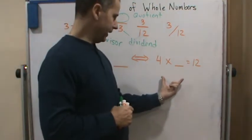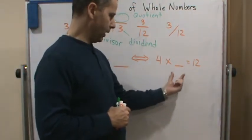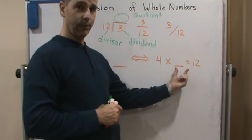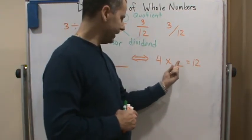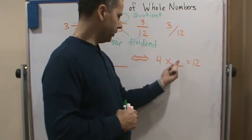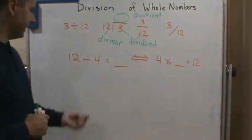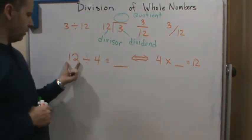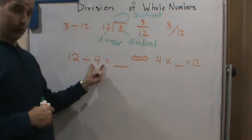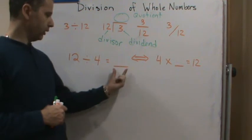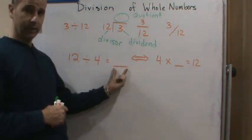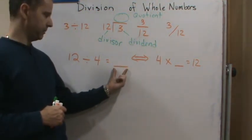When I look at it as a multiplication problem with this missing factor here, I say, okay, well what do I need to stick in here to make this true? The answer would be 3, which means that if I take 12 and divide it into 4 equal pieces, each piece or each group will contain 3 objects or 3 pieces.